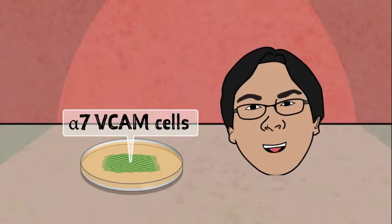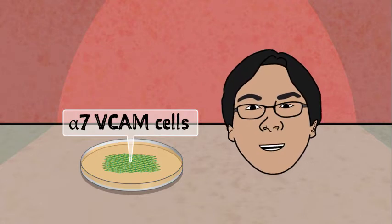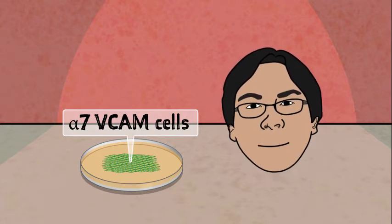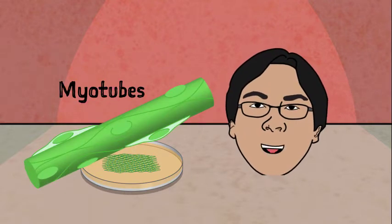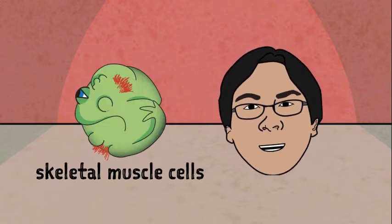When we take these alpha-7-VCAM cells out and grow them in a dish, they differentiate and fuse into multinucleated tubular structures called myotubes, the building blocks of skeletal muscle. So it's great. We find skeletal muscle cells in teratomas.